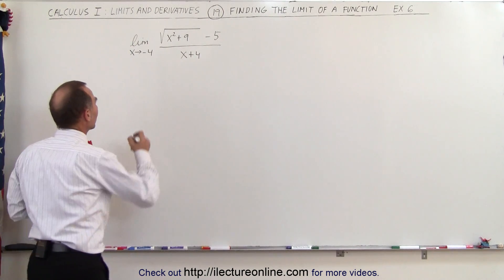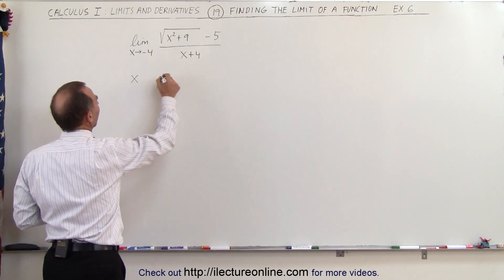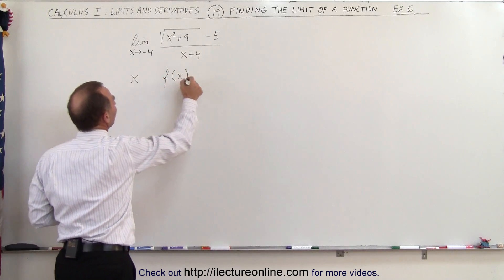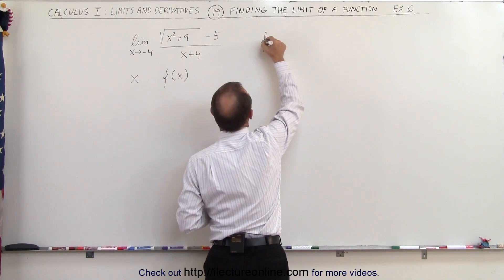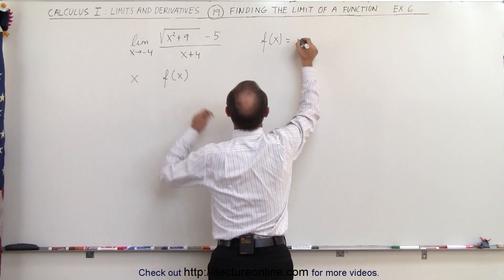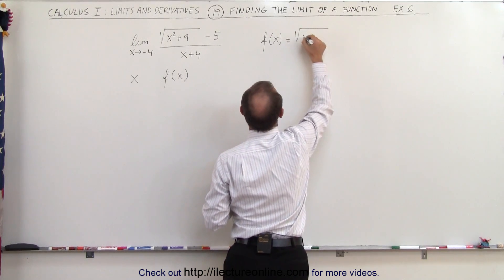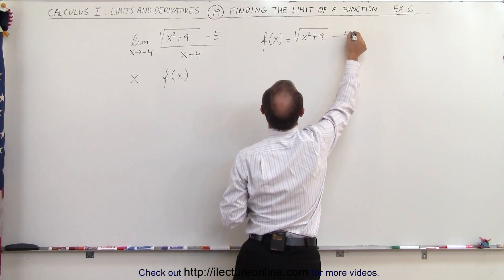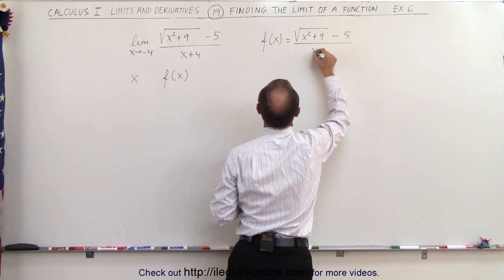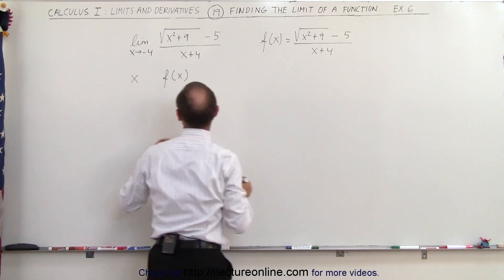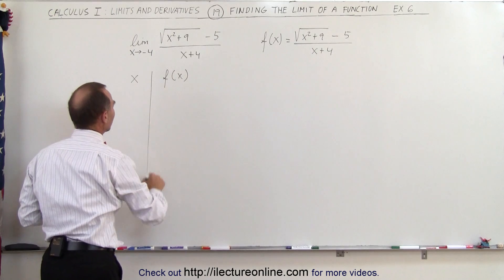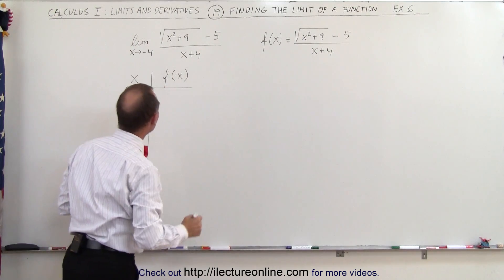So what we can do is set up a table of values, x and the function of x, realizing of course that the function of x is equal to the square root of x squared plus 9 minus 5, all divided by x plus 4. And so let's plug in some values for x and see what the corresponding values for y are.